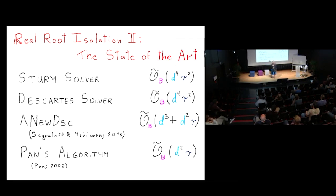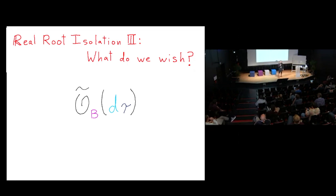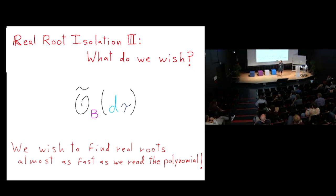The question is: what complexity do we want, and can we beat the champion? What we wish for is essentially d·tau — the most amazing complexity bound we can get. This would mean we can compute the real roots as fast as we can read the input integer polynomial.